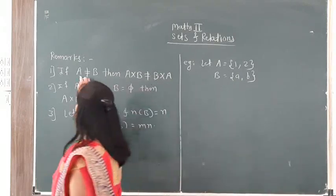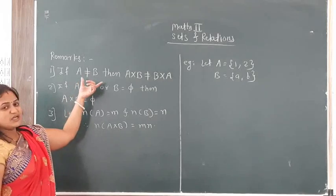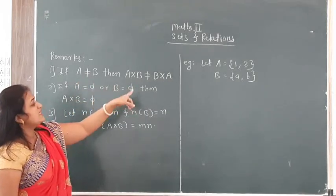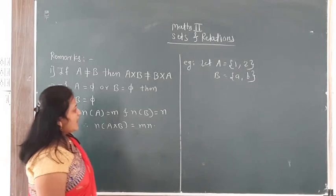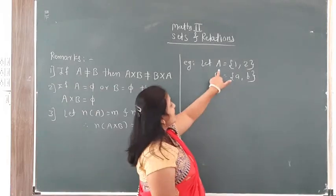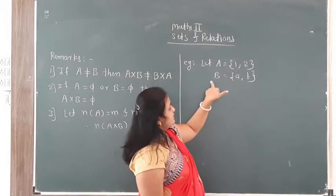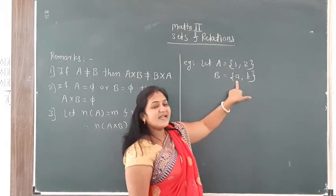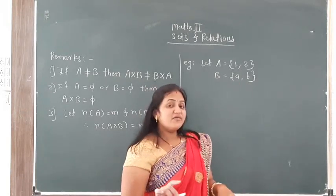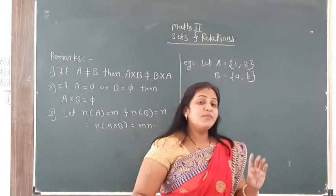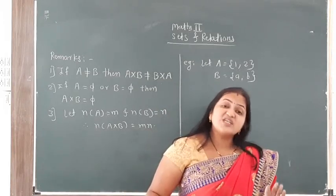We can remark: if A is not equal to B — that is, these two sets are not equal — then A cross B is not equal to B cross A. For example, here A set contains {1, 2} and B set contains {a, b}. The number of elements and the elements are also the same.